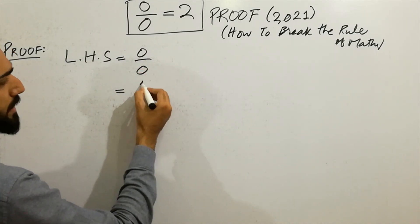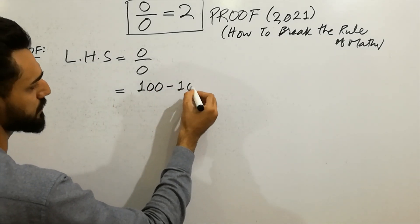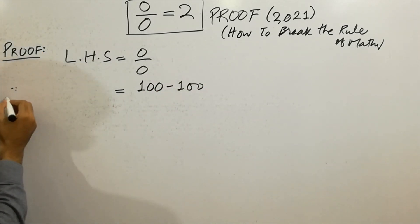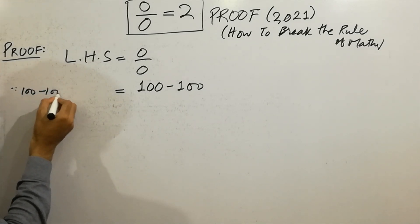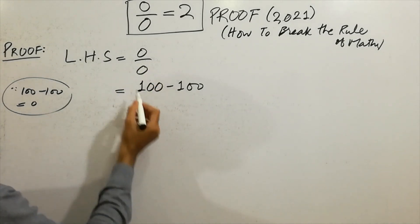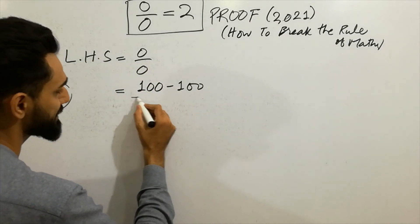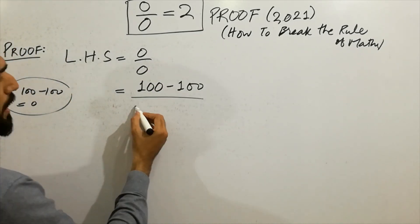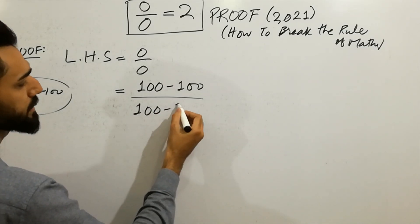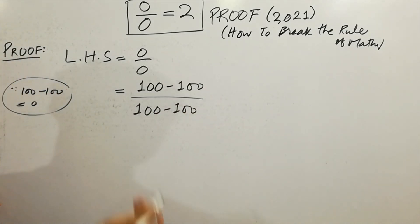You can write here zero. You can write here 100 minus 100, since 100 minus 100 always equals zero. Now you can write here zero: 100 minus 100. And similarly, just write here 100 minus 100. Very, very easy. Next step.